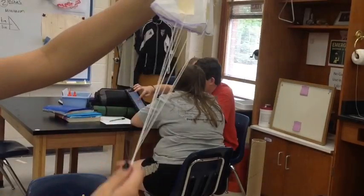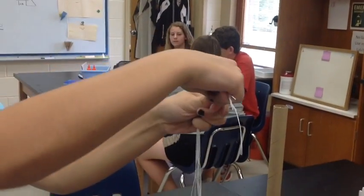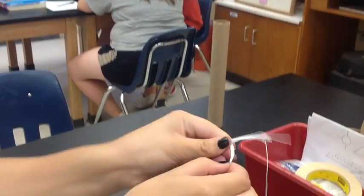Now to tie your strings together. First make sure all your strings are even, then tie a knot at the bottom. Now cut off excess strings.